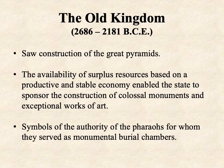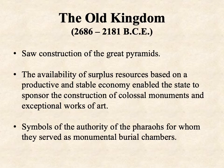The Old Kingdom ran from 2686 to 2181 BCE. Each kingdom has very specific characteristics that distinguish it from the others. The Old Kingdom's most distinctive characteristic is that this is the period that saw the construction of the Great Pyramids. Most people are familiar with the pyramids' strong association with ancient Egypt, but what a lot of people don't know is that all of these pyramids were built during the Old Kingdom. After the Old Kingdom, they discontinued the practice.